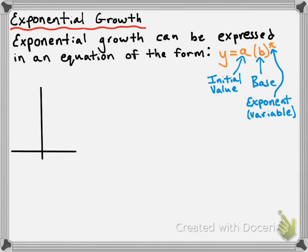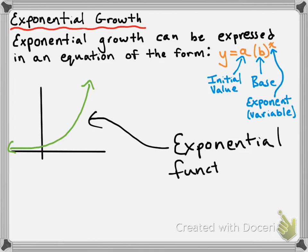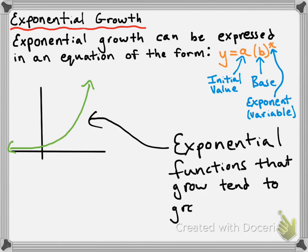In terms of what the graph of an exponential growth problem looks like, it's going to look like this here. Exponential functions that grow tend to grow really, really quickly — they'll grow very, very fast. They're always going to look something like this, to some degree.